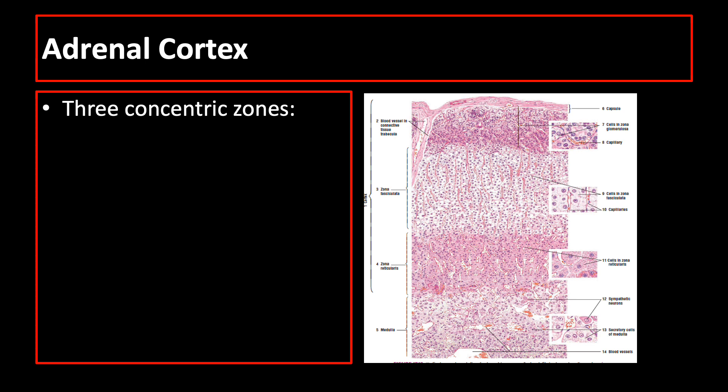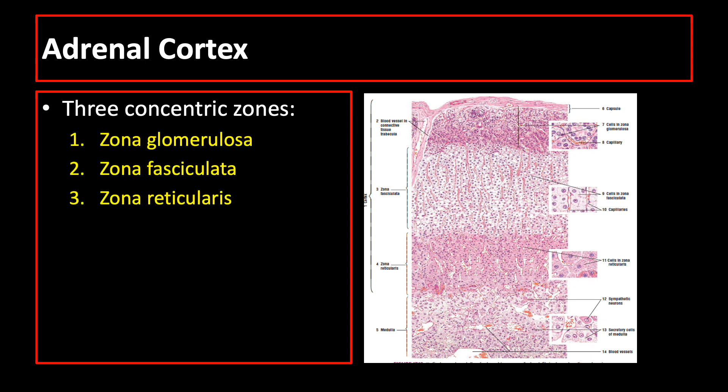The adrenal cortex has three concentric zones. From outermost to the innermost, the zones are zona glomerulosa, zona fasciculata, and zona reticularis. Let us discuss these zones one by one.